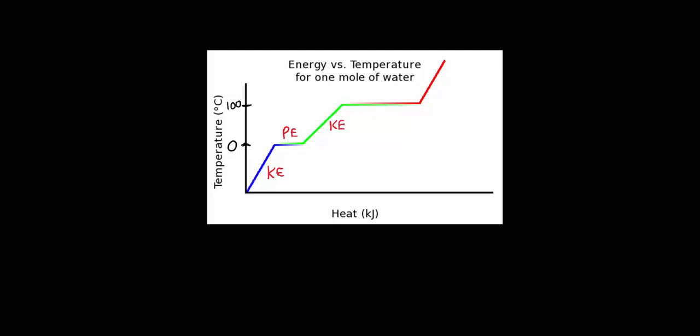At 100 degrees Celsius the water begins to boil and the temperature stops rising. The energy is now going into breaking the bonds to turn the liquid water into a gas — steam. So the potential energy is increasing but the kinetic energy is constant. Finally, only once all of the water has been turned into steam can the temperature rise continue, and the steam gains kinetic energy and reaches a higher temperature.